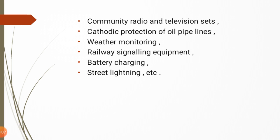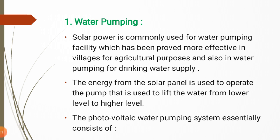The first detailed application is water pumping — a very important application of the photovoltaic system. Solar power is commonly used for water pumping, which has proved more effective in villages for agricultural purposes and also for drinking water supply. The photovoltaic system is used where there is a deficiency of drinking water, for water purification and pumping.